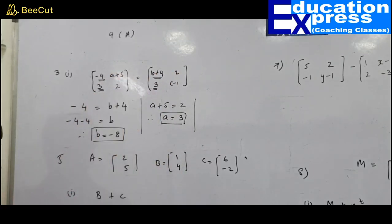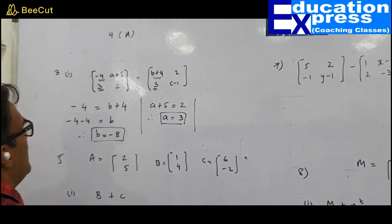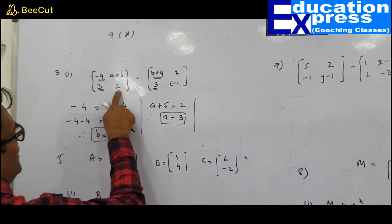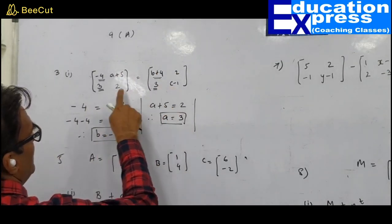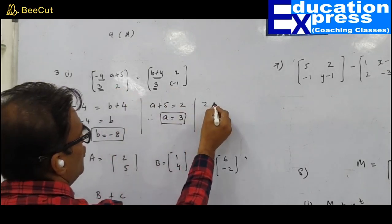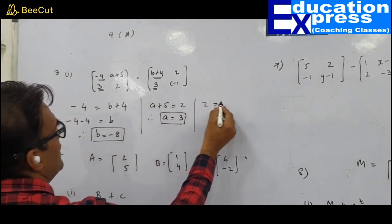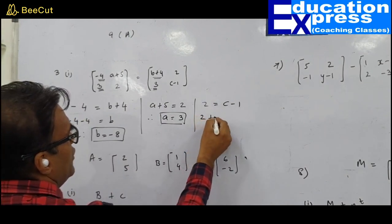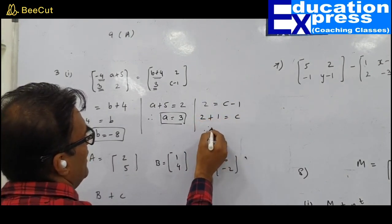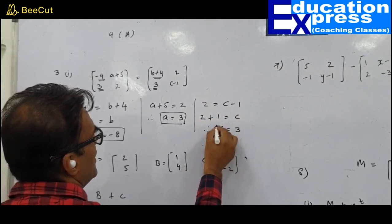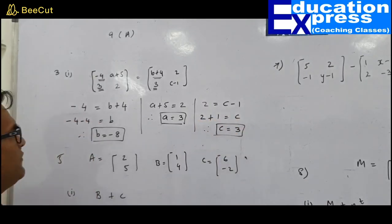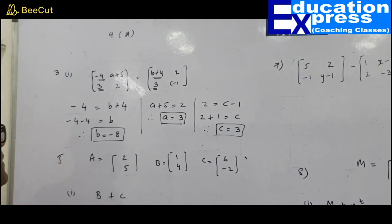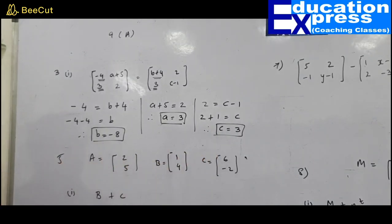Checking: 3 equals 3 — no unknown there. For the remaining position: c−1=2, so 2+1=c, therefore c=3. So for this 3-mark question, we have found a, b, and c.